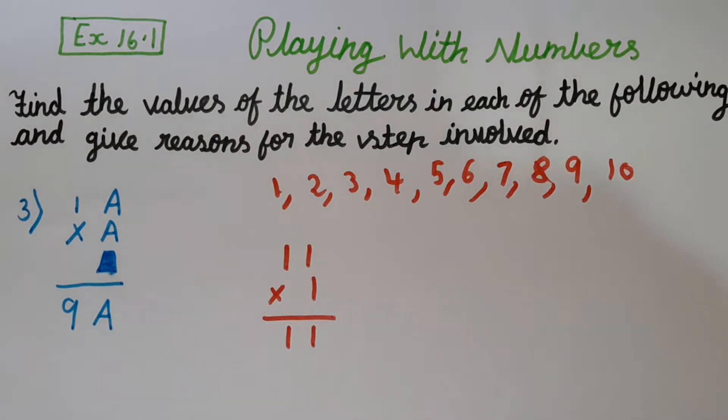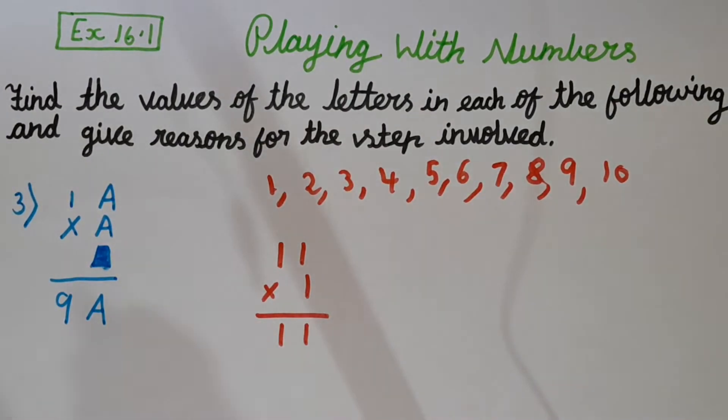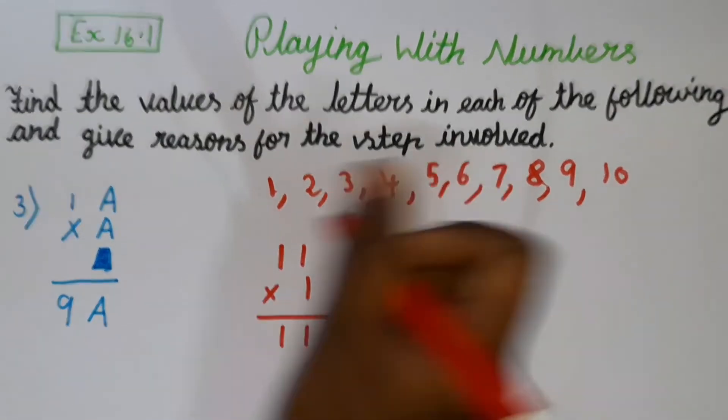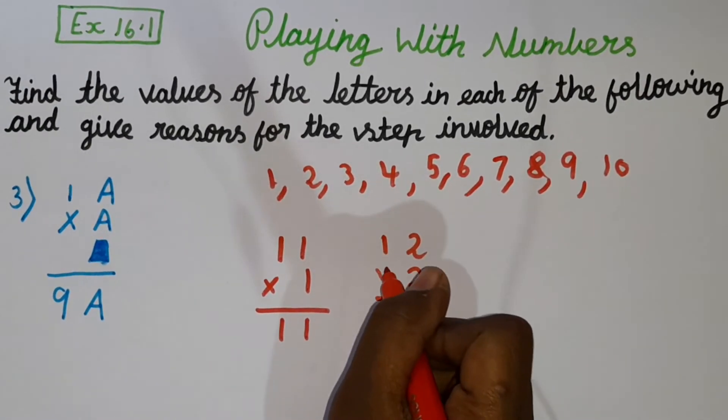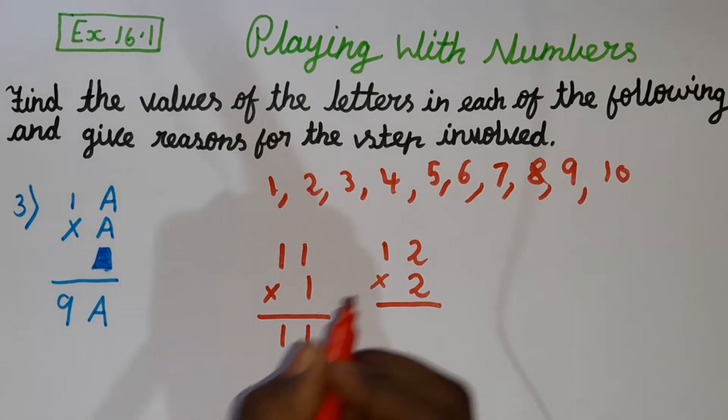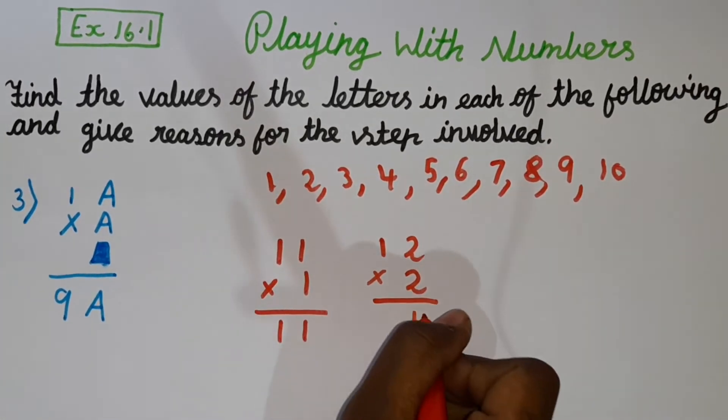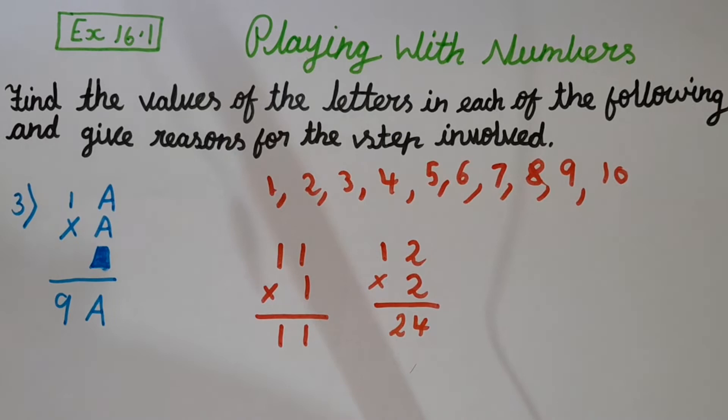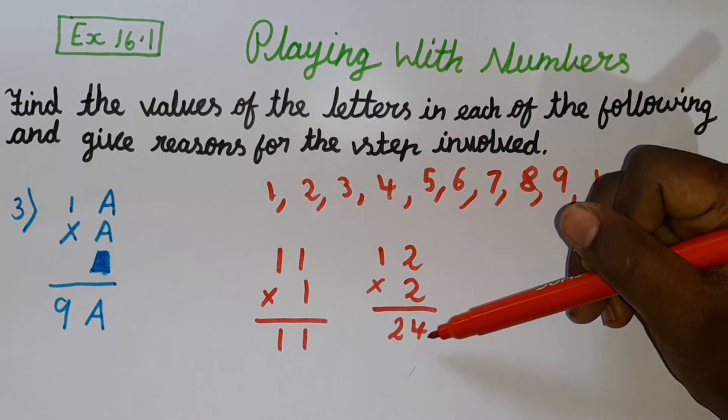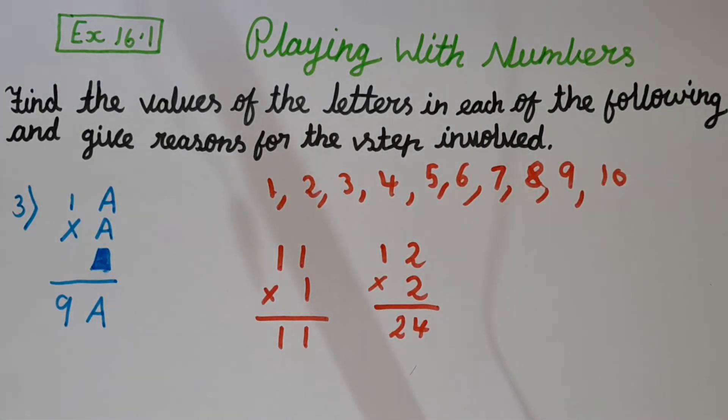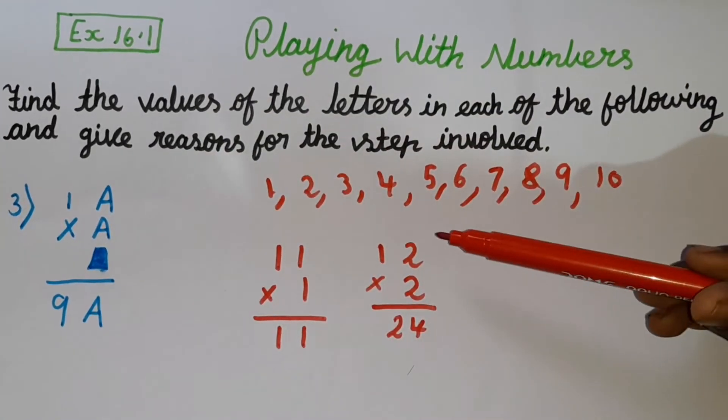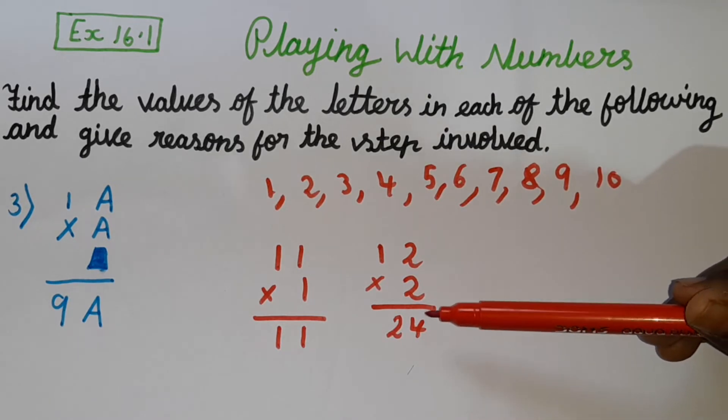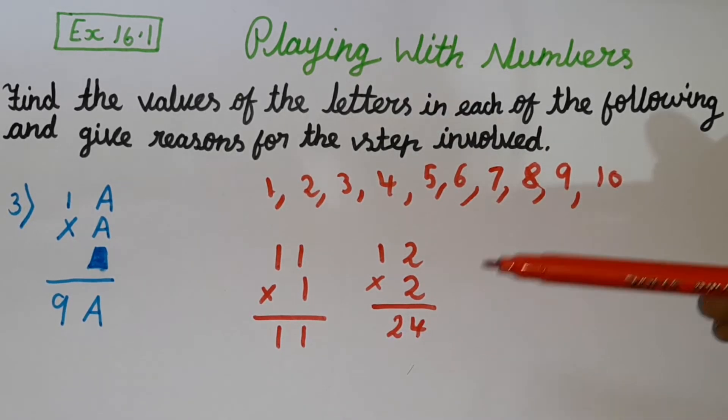Now let's try with 2. So 1 as it is, 2, 2. Let's see. 2 into 2 is 4. 2 into 1 is 2. So we got the answer 24. While multiplying 2 into 2, we got the answer 4. We can understand we are not going to find the answer because the A's value should be same. Here both we have the same number, but here we got a different number. It should be 2. So 2 is also not possible.